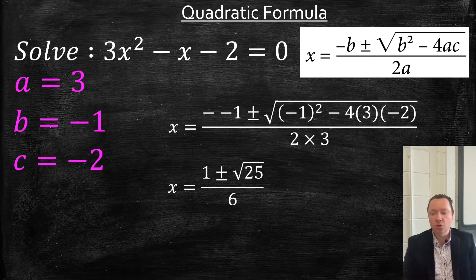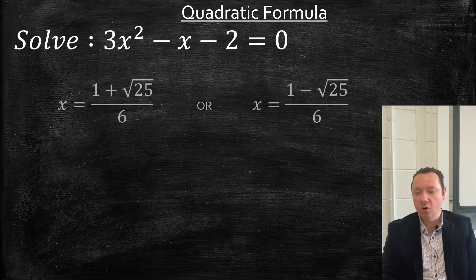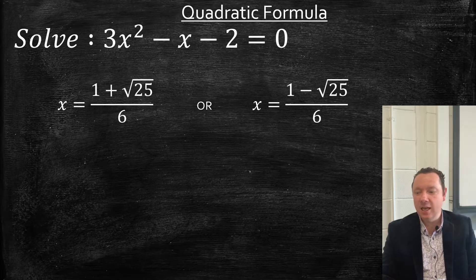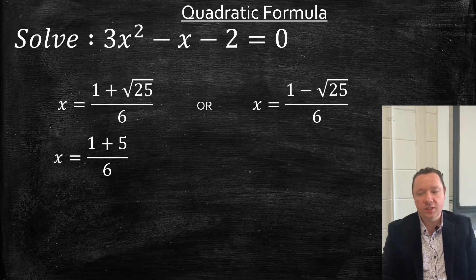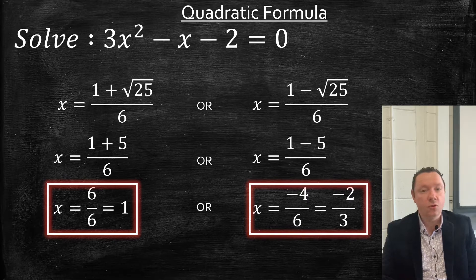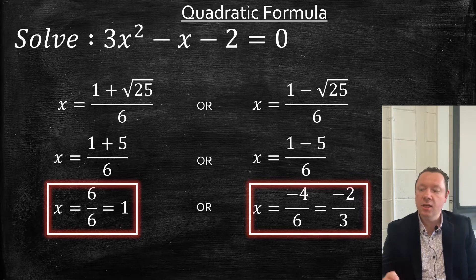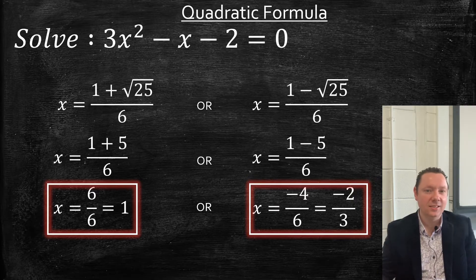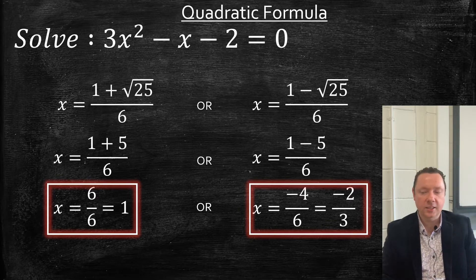We now split that into two answers — that's what the plus and minus is for. So we've got 1 plus the square root of 25 over 6, and 1 minus the square root of 25 over 6. That's 1 plus 5 over 6, or 1 minus 5 over 6. The first gives us 6 over 6, which is just 1. The second gives minus 4 over 6, which simplifies to minus 2 thirds. If you prefer a decimal, it's minus 0.67 to two decimal places, or minus 0.7 to one decimal place.